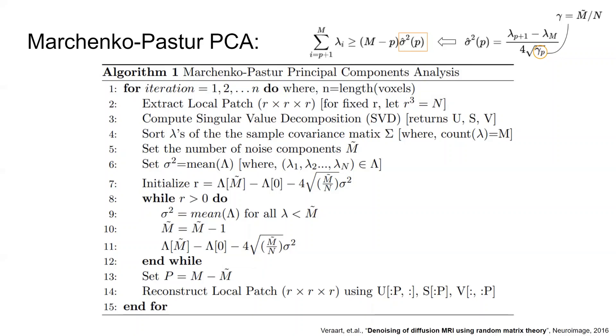Now for each patch, we will estimate the bulk spectrum. To do so, we need a stopping criterion to classify which singular values correspond to noise and which ones correspond to the actual signal. We initialize this R as per the formula shown on the top, which comes from an algebraic manipulation that I showed in the previous slide. While the value of R is greater than 0, we decrement M hat, which was initially equal to M, and recalculate the value of R. Once the while loop ends, we take the non-noisy signal components P, which is basically the total minus the noisy estimated ones, and reconstruct the patch using only the P components. Once we have done this for all N voxels in the data, we get the denoised 4D DWI data back.